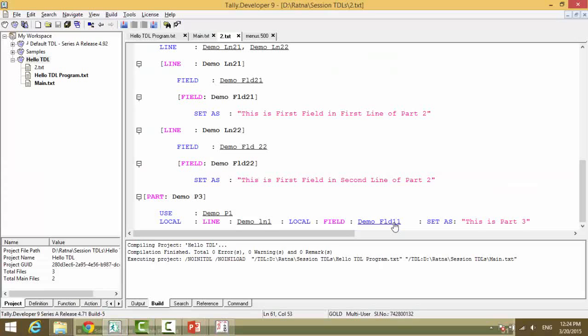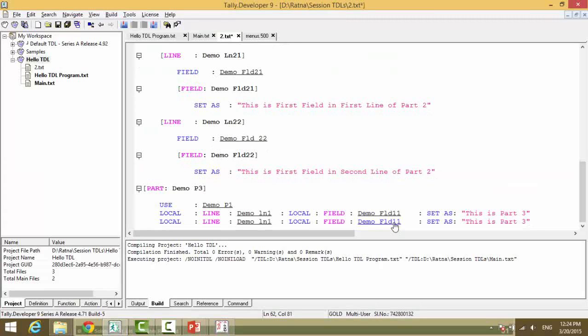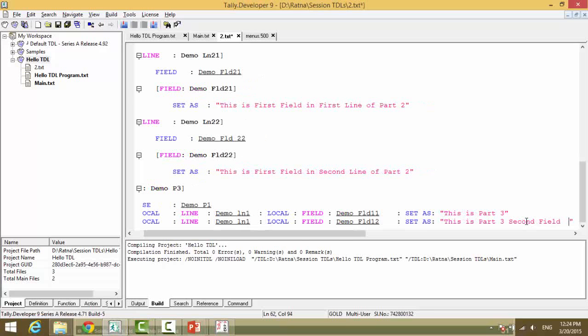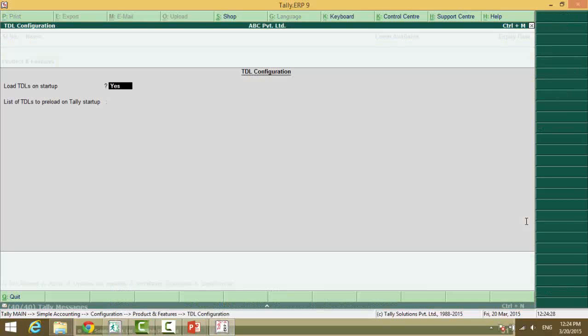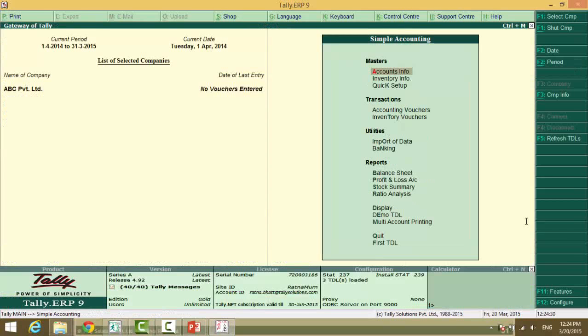Similarly copy paste. And we will just change the field name to L2 and part three. Second field. F12 TTL F4. Control A. Accept.